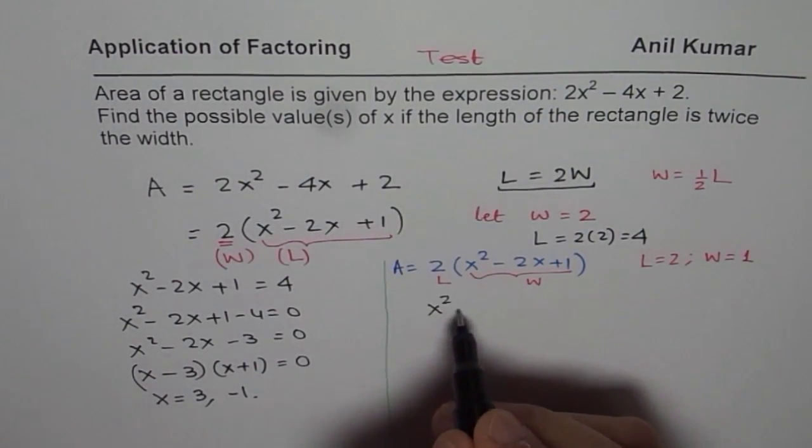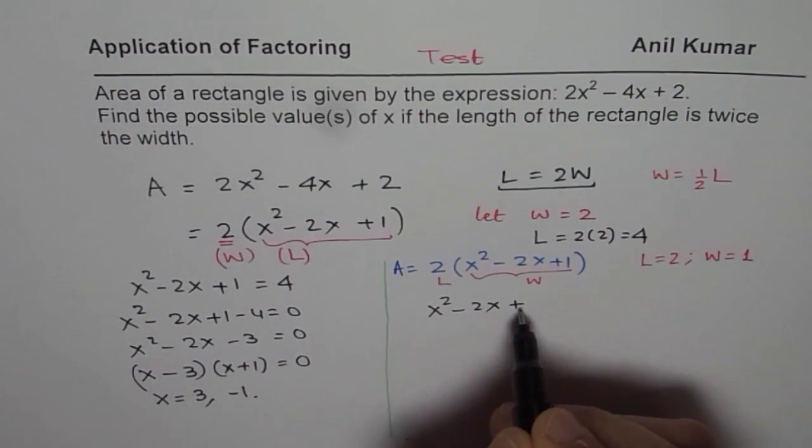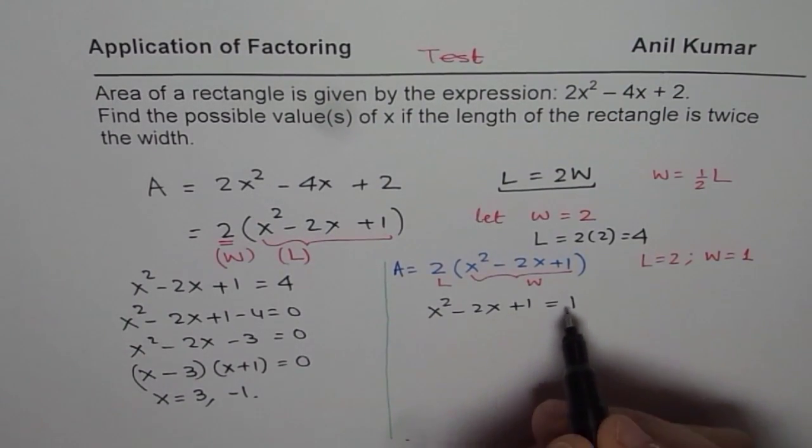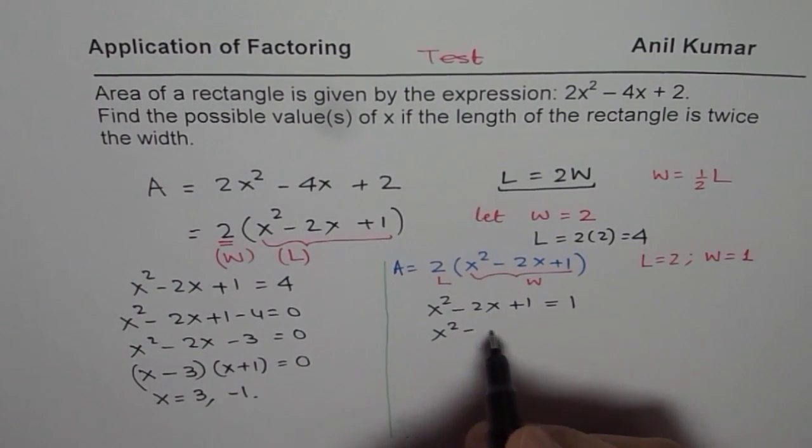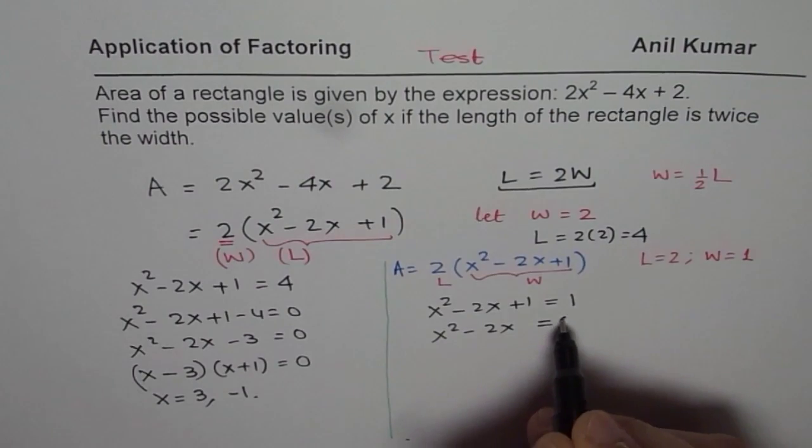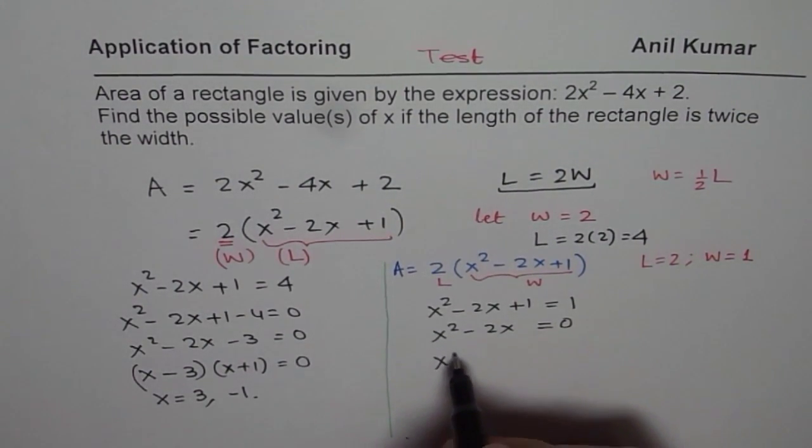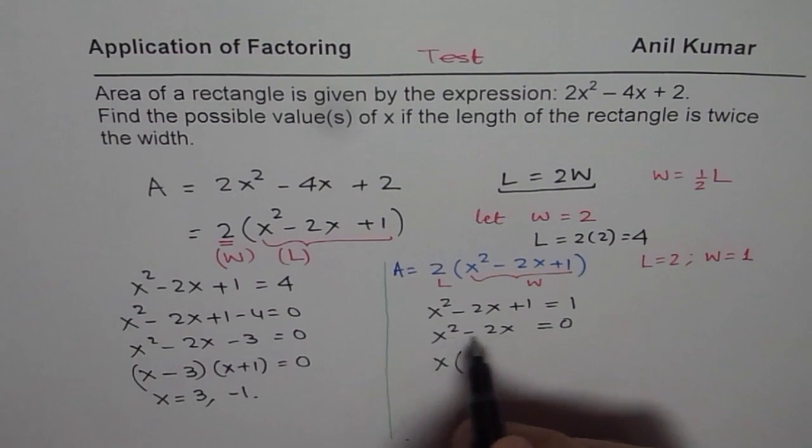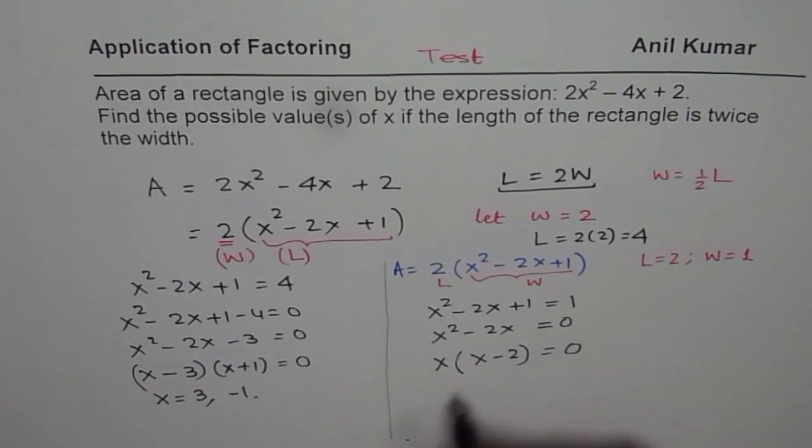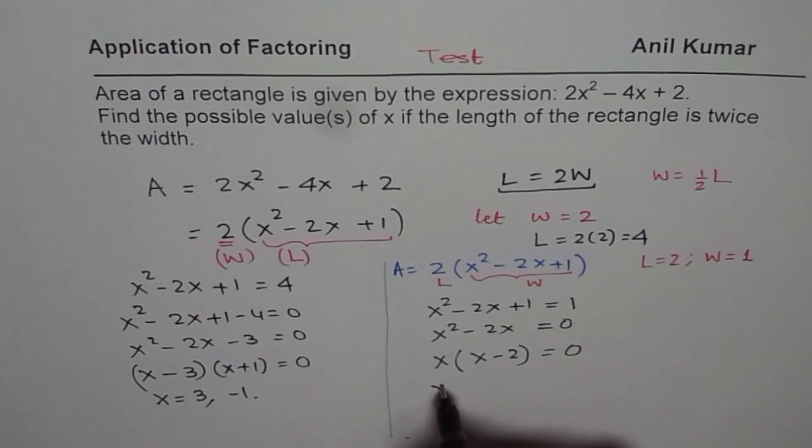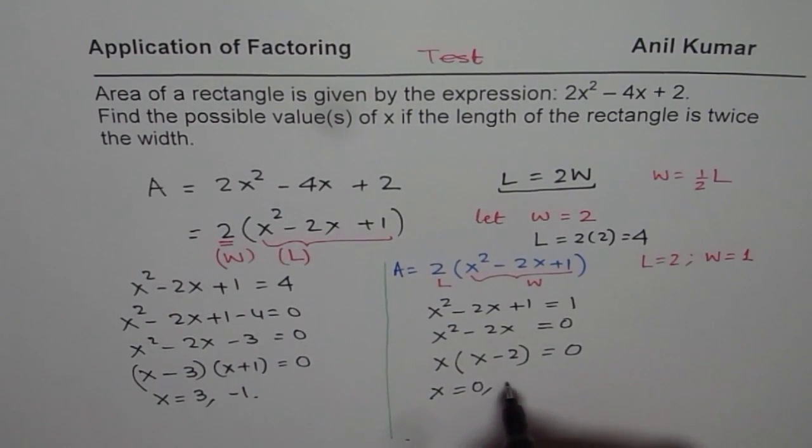So in that case, we get x²-2x+1 equals to 1. And solving, we get x²-2x equals to 0, 1 minus 1. And that can be factored. We can get x equals to, x is a common factor. x times x-2 equals to 0. So in this case, we have two solutions, x is equal to 0 and x is equal to 2.